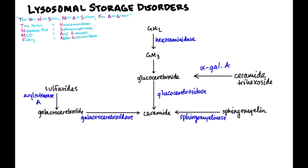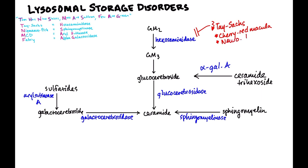We have six diseases to run through, and I'll give you a buzzword for each. Hexosaminidase deficiency gives you Tay-Sachs disease — think cherry red macula and neurologic degeneration. Niemann-Pick disease gives you cherry red macula and hepatosplenomegaly. Niemann-Pick is basically Tay-Sachs plus hepatosplenomegaly.